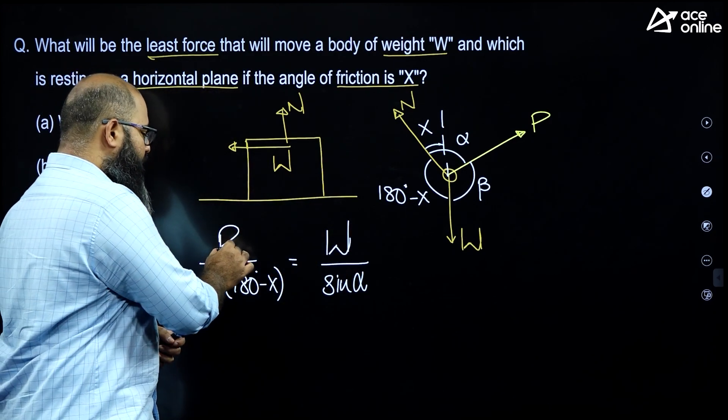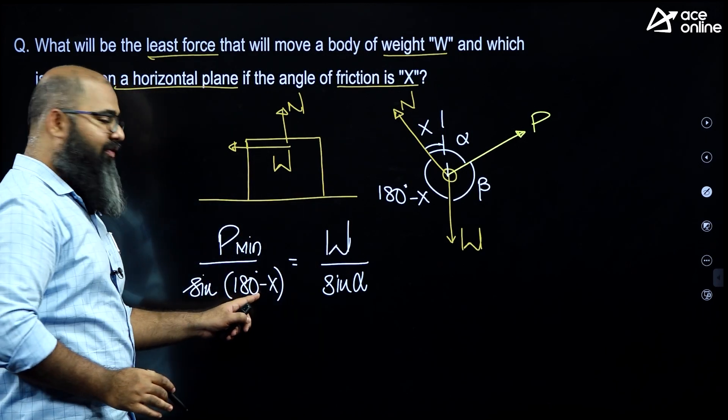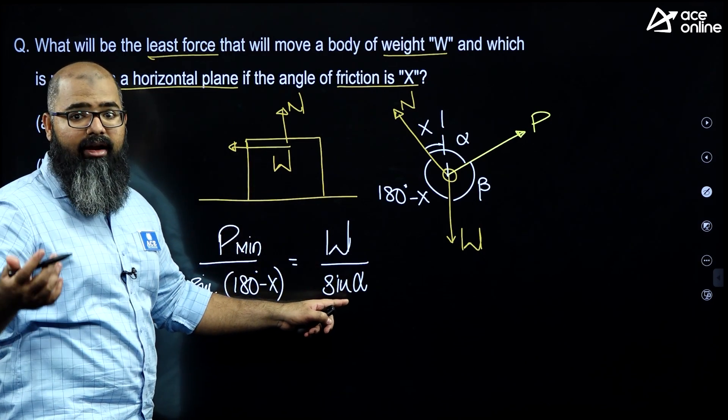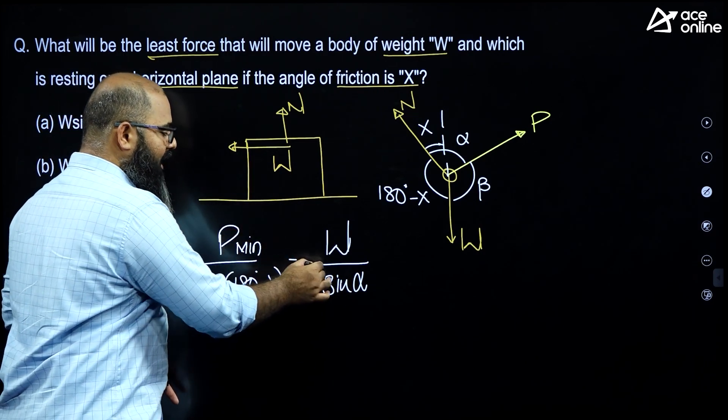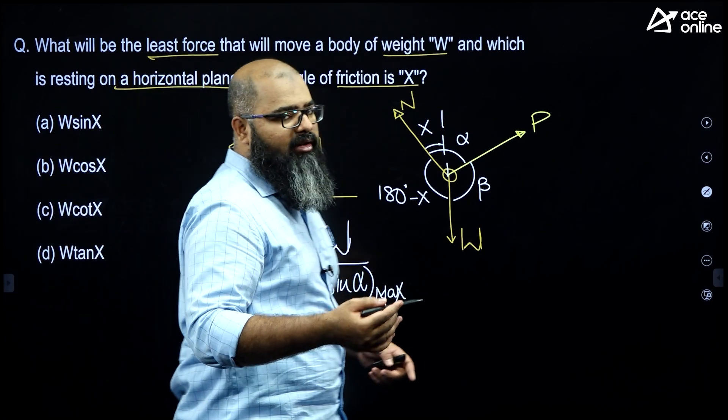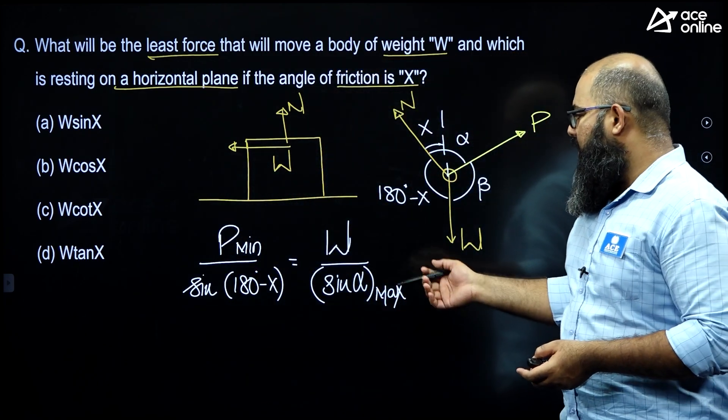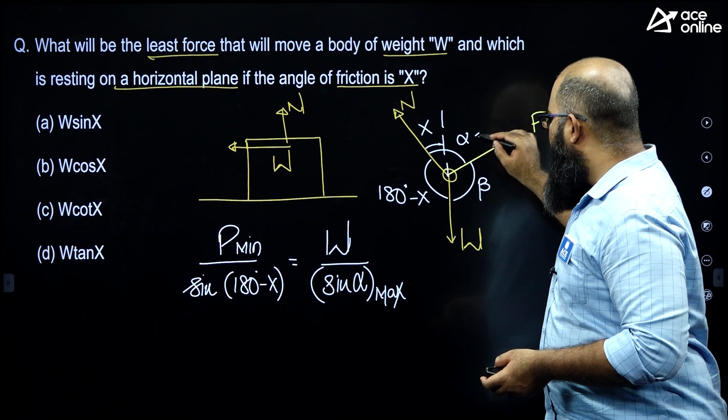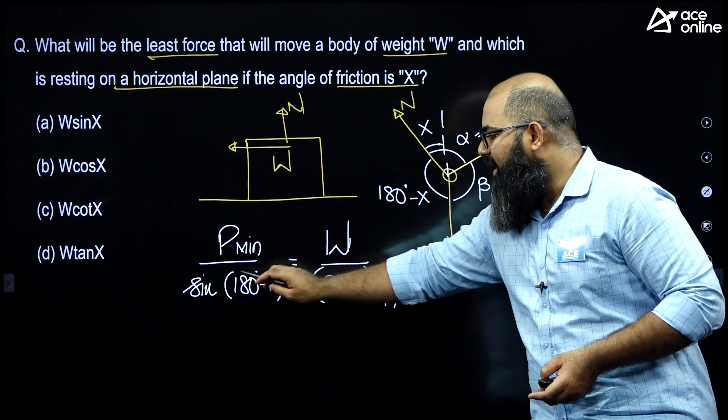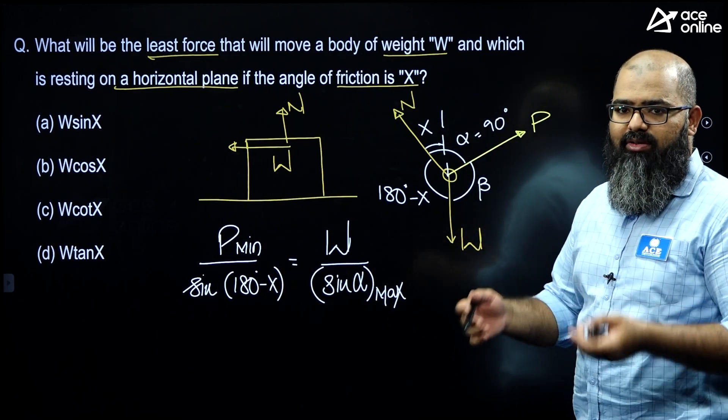If I wish to minimize the value of P over here, the only way is to maximize. See, this is defined. This is predefined. W is predefined. Alpha is something which is a variable in our hand. If I want to minimize the value of P, I have to maximize the value of sine alpha. And what is the maximum value of sine alpha? The value of sine alpha's maximum value will be 1. That way, I can say this alpha has to become equal to 90 degrees and the value of P minimum will be equal to W sine of 180 minus X.